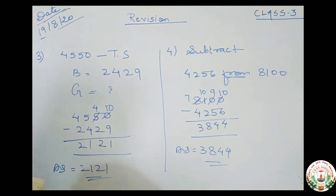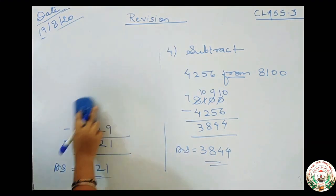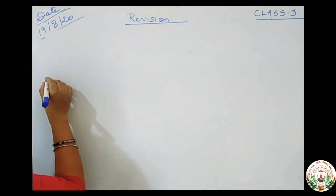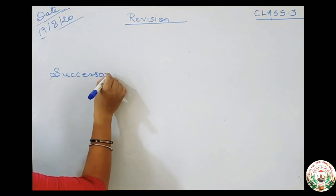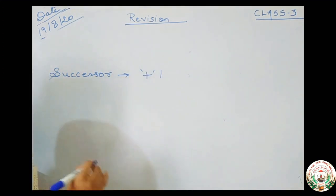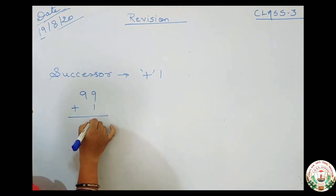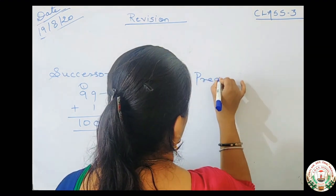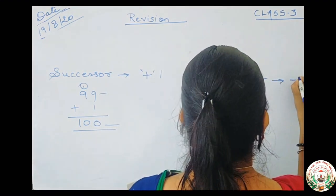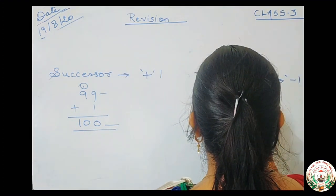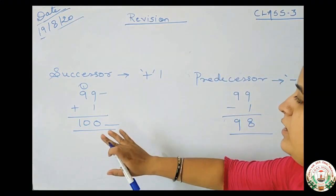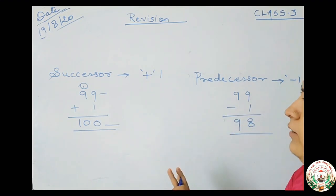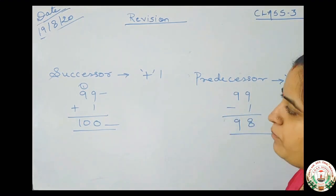Now addition — you all know how to add. Now I am telling you about successor and predecessor. Successor means you will add plus 1 to whatever number is given; that becomes the successor. Predecessor means you subtract 1 from the number. In simple words, successor means the number that comes after, and predecessor means the number that comes before.